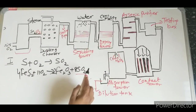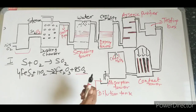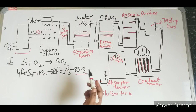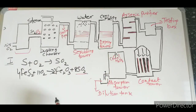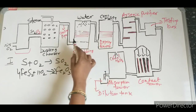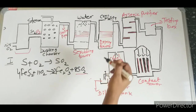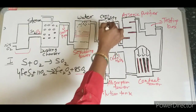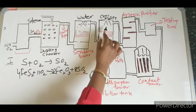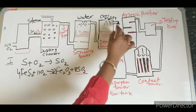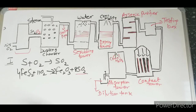Why is the drying tower needed? Because after spraying water in the scrubbing tower, the gases contain water molecules and moisture. The best drying agent for SO2 is concentrated sulfuric acid, which is sprayed in a downward direction. The gases then move to the arsenic purifier.